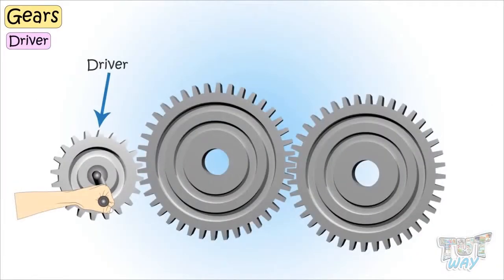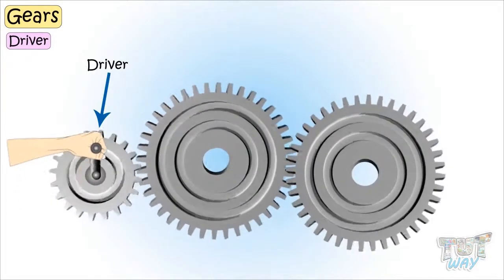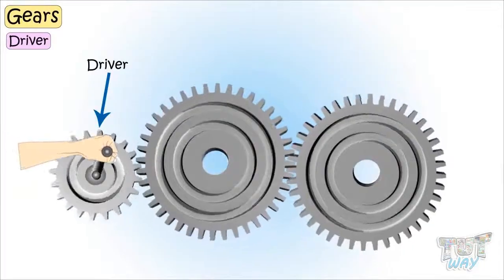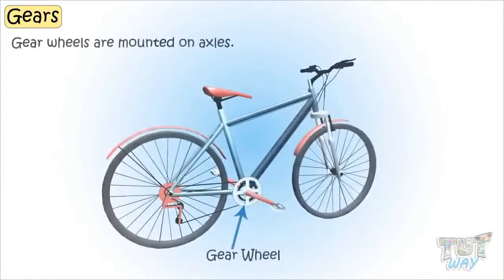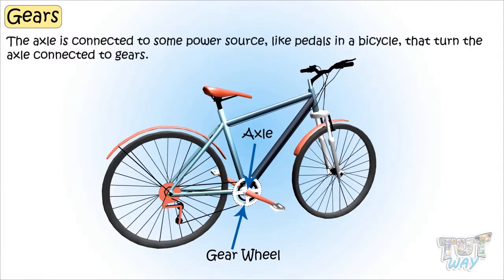The driver is the first gear that starts the movement in a gear train. Gear wheels are mounted on axles, and an axle is connected to some power source, like pedals in a bicycle, that turns the axle connected to gears.